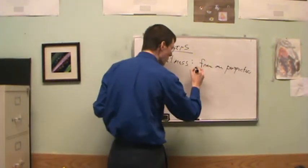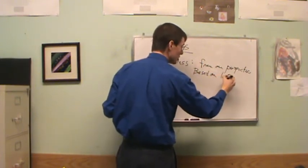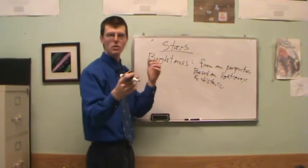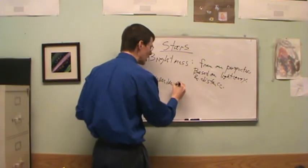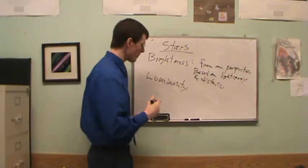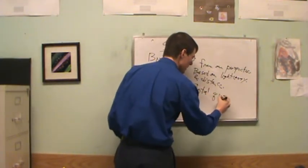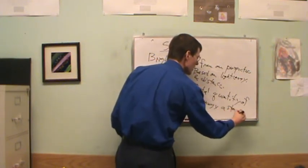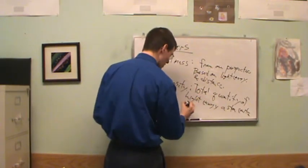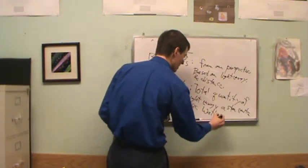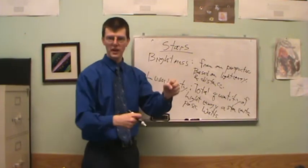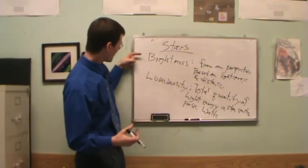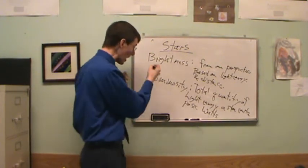So brightness from our perspective is based on light energy given off and also distance — all the stars are sprinkled throughout space, so who knows which is closer or farther. What I really want is the luminosity of a star. Luminosity is the total quantity of light energy that a star emits per second, measured in watts — just like a light bulb. If I want to understand what's going on inside stars, luminosity is what I want.